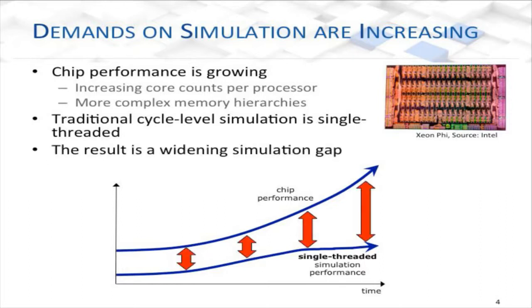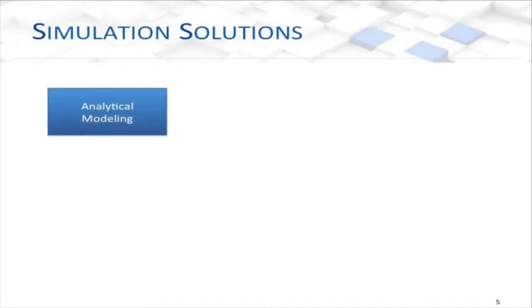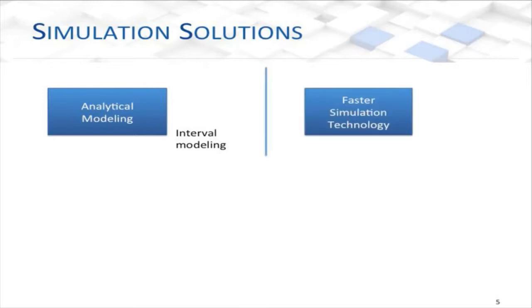Interval modeling is one type of analytical model that allows us to understand an out-of-order processor core. Using analytical modeling, we can speed up simulation, and we've done this in some of our work using the Sniper multi-core simulator — but that's a separate, orthogonal topic. Today, what we want to talk about is workload reduction, and we want to do this with sampling.